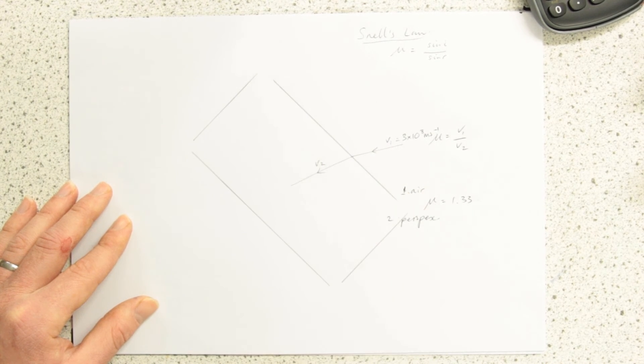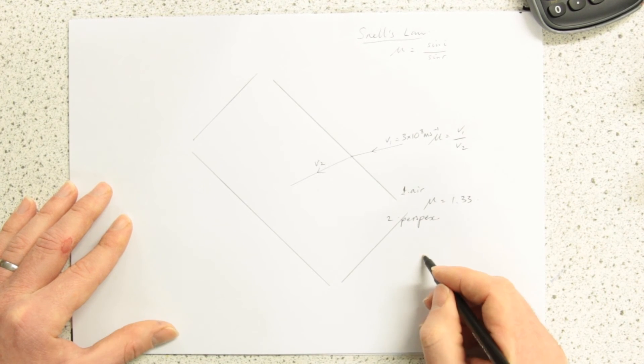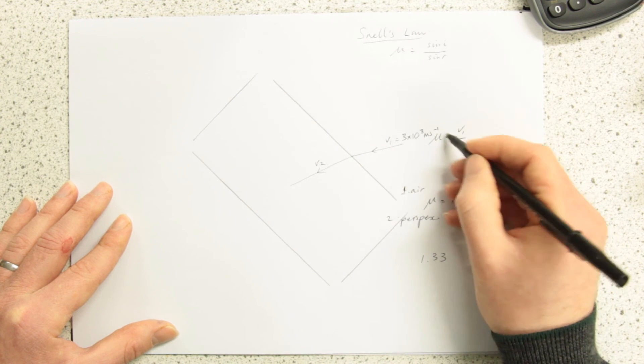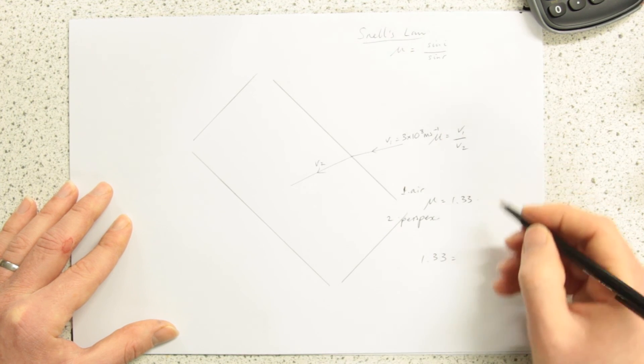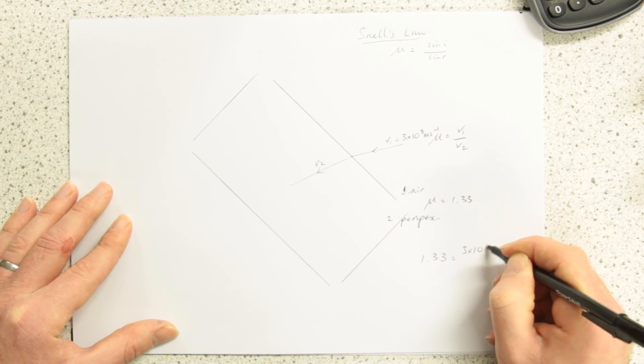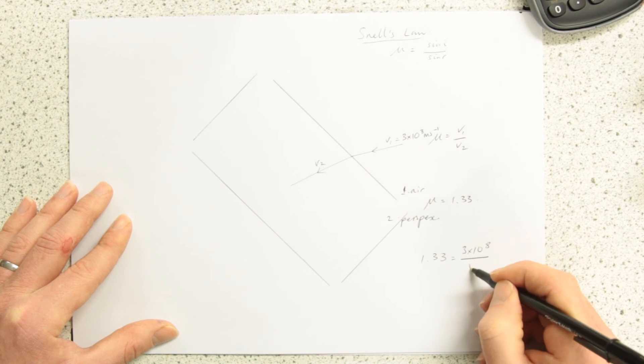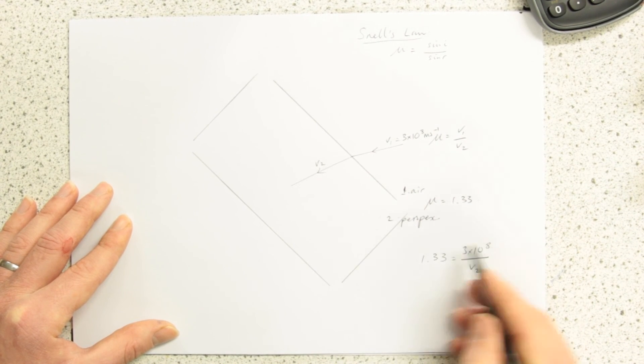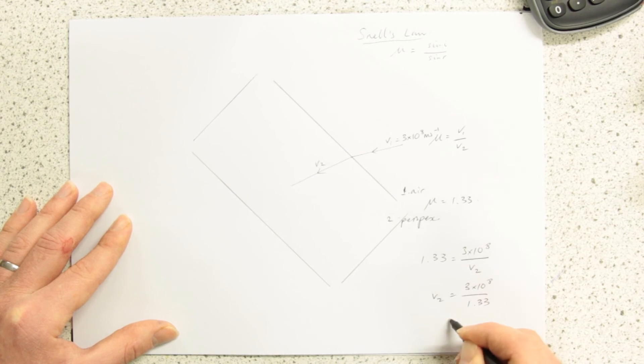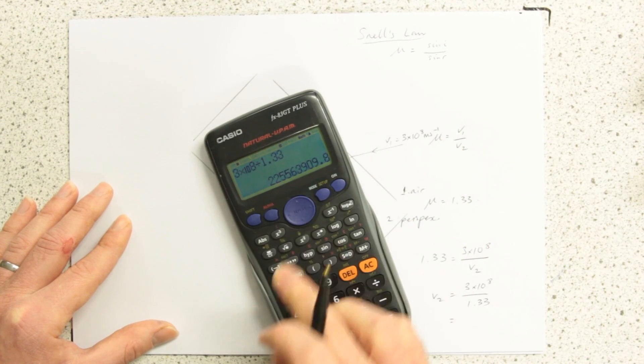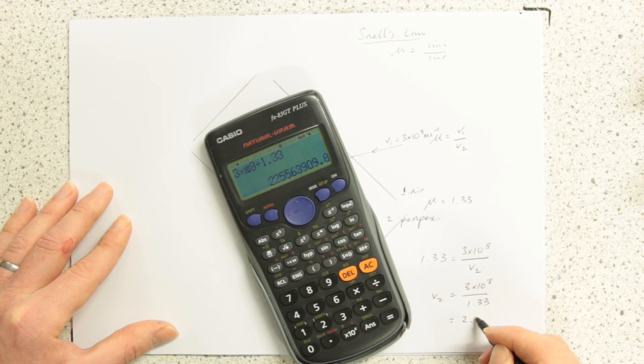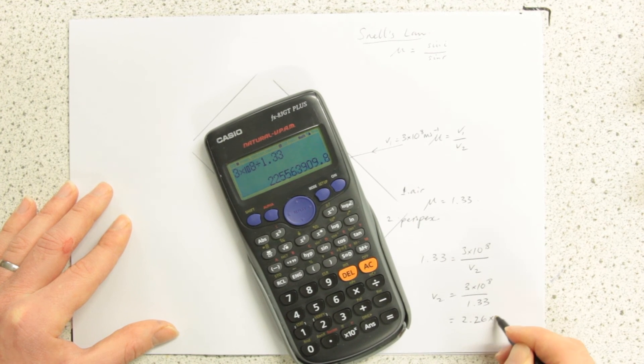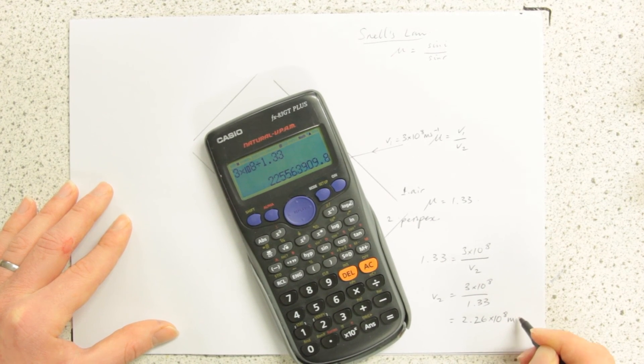But we don't know v2, so what we can quickly do, 1.33, that's mu, equals 3 times 10 to the 8 over v2. OK, and then rearrange for v2, which is 3 times 10 to the 8 over 1.33, gives us 2.26 times 10 to the 8 metres per second.